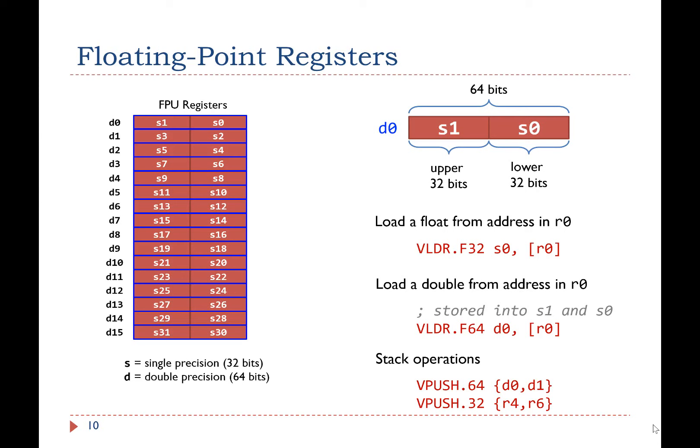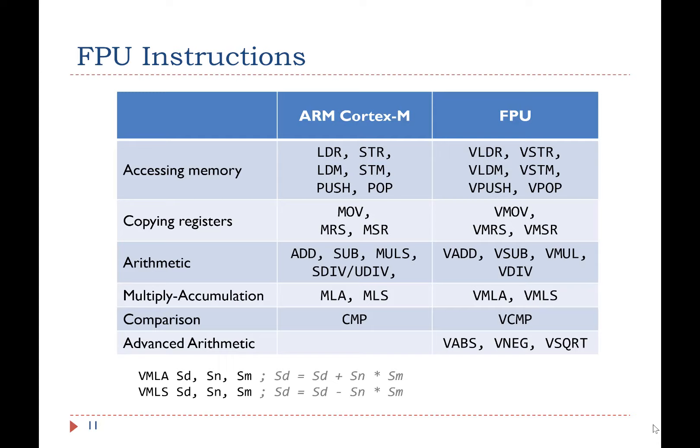This table compiles some Cortex-M and FPU instructions, such as access memory, copying registers, arithmetic operations, and comparison. All FPU instructions start with the letter V, which stands for Vector Floating Point. FPU also supports some advanced operations which have no corresponding instructions on Cortex-M, such as the square root instruction, VSQRT.